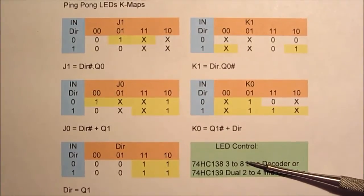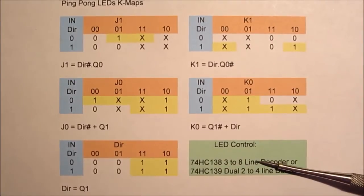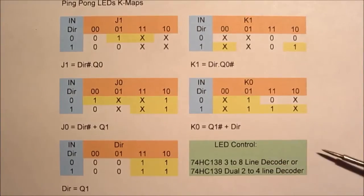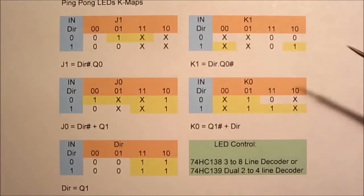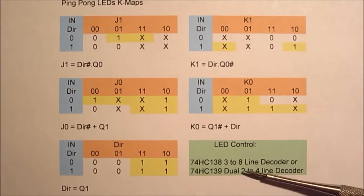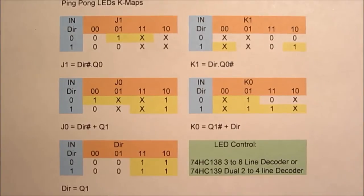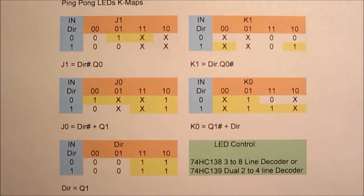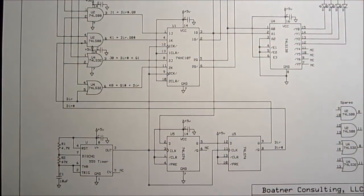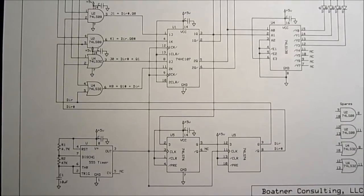Rather than working out Karnaugh maps for all the LED outputs, which get fairly complicated, we'll instead run our state bits into a two-to-four line decoder — or use a three-to-eight line decoder using only two address lines — and get our LED control that way, saving a lot of space and logic.